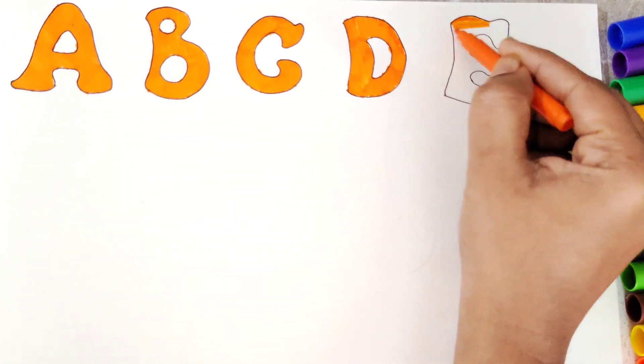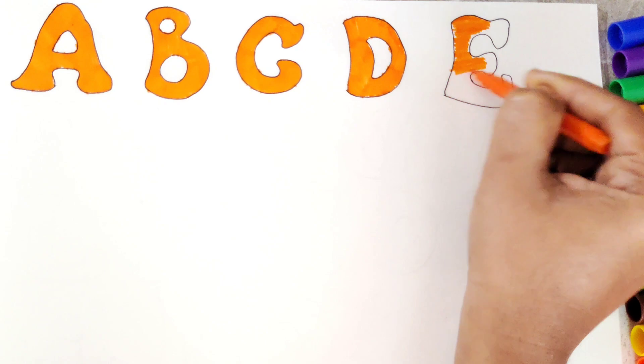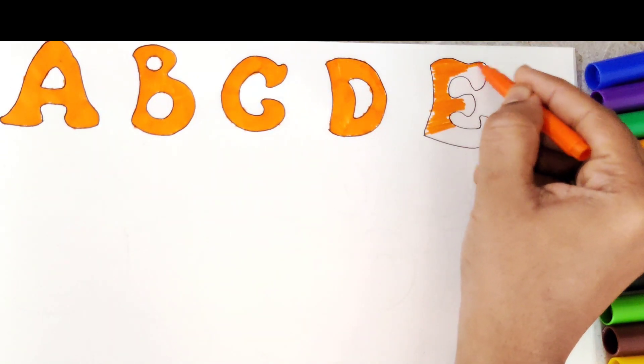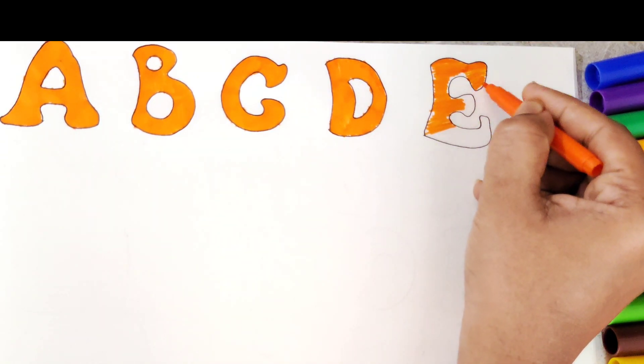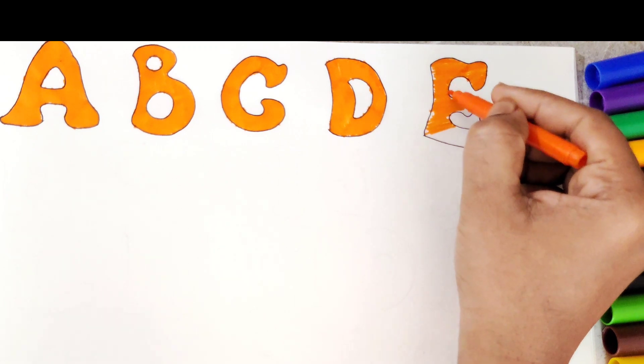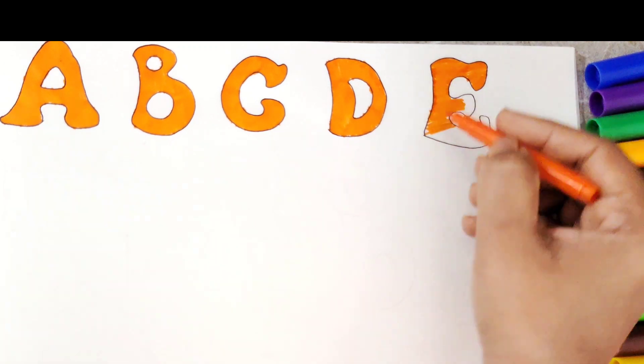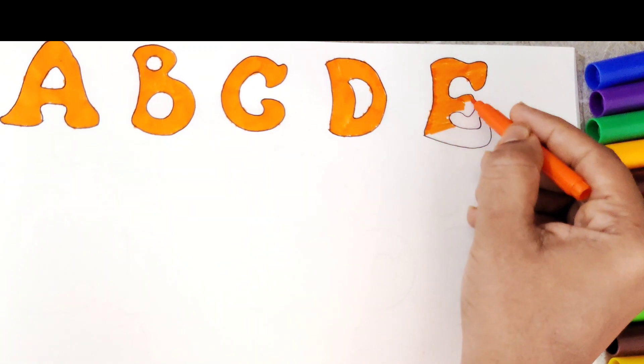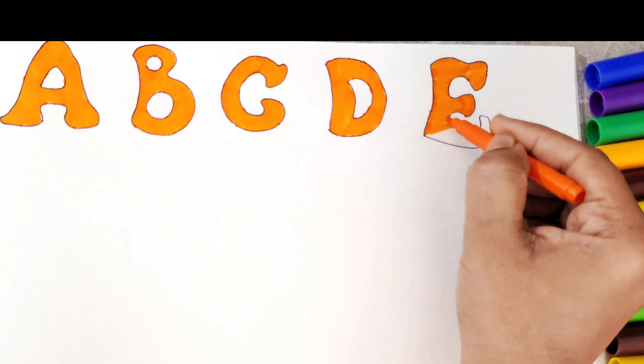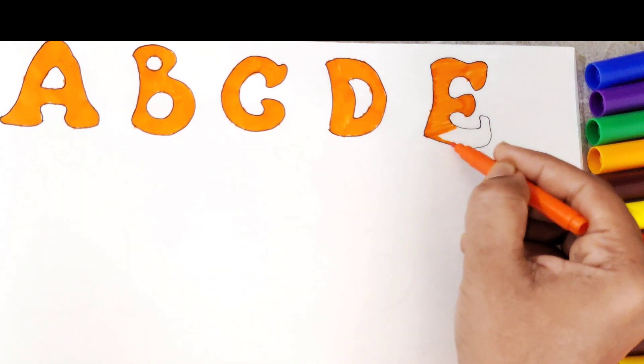Now let's color orange in letter D. D for dog. E for elephant. All five letters are in orange color. Those are looking very nice.